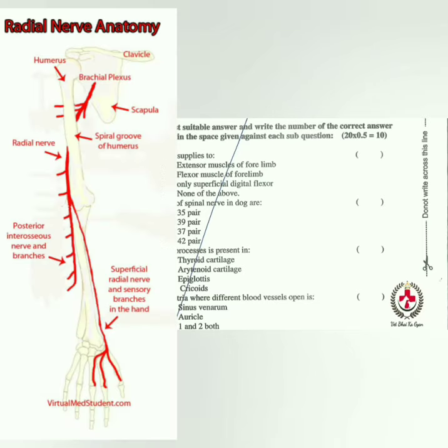Starting MCQs: the radial nerve supplies the extensor muscles of the forelimb — option one is correct. Extra point to know: the radial nerve is the thickest nerve.